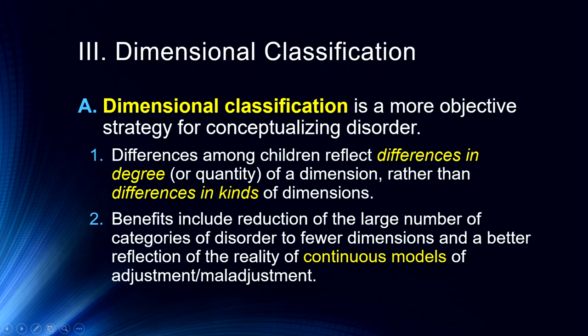Benefits of dimensional classification include a reduction in the large number of categories — we want to get down to as discrete categories as possible, because the more discrete the categories, the more finely honed the treatment. Cancer treatment is a good example: we now genotype the person and their tumor to precisely target that specific cancer, moving from massive doses of radiation and chemotherapy to very targeted therapies. The better we get at diagnosis, the better we can get at treatment.